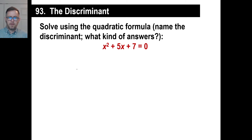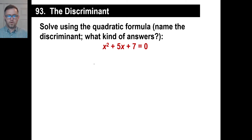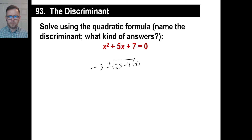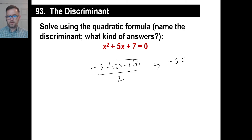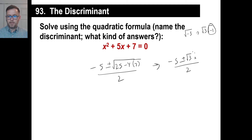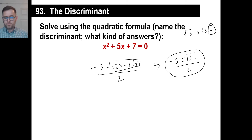Let's try another one — pause it and do this yourself. We get negative b plus or minus the square root of b² — that's 25 — minus 4 times A times C. All over 2a. We have negative 5 plus or minus the square root of 25 minus 28, which is negative 3. That's the same as the square root of 3 times the square root of negative 1, which by definition is i. So i goes on the outside, giving two imaginary solutions. We had a negative number — 25 minus 28 is negative 3 — under the discriminant, and that gives us two imaginary answers.